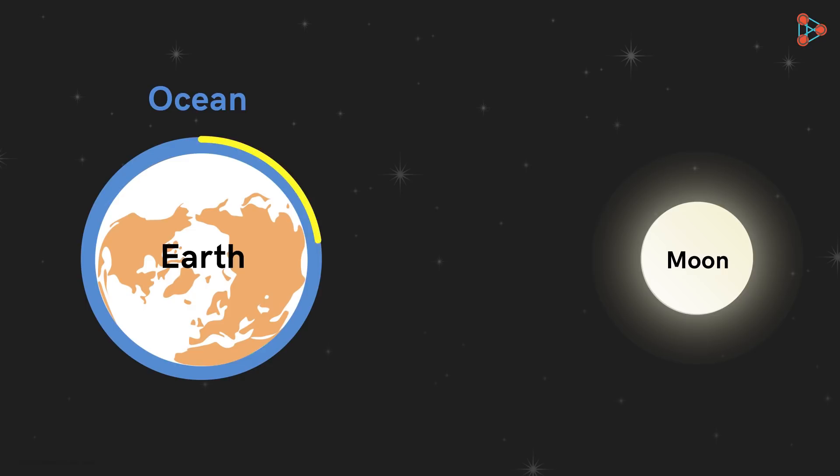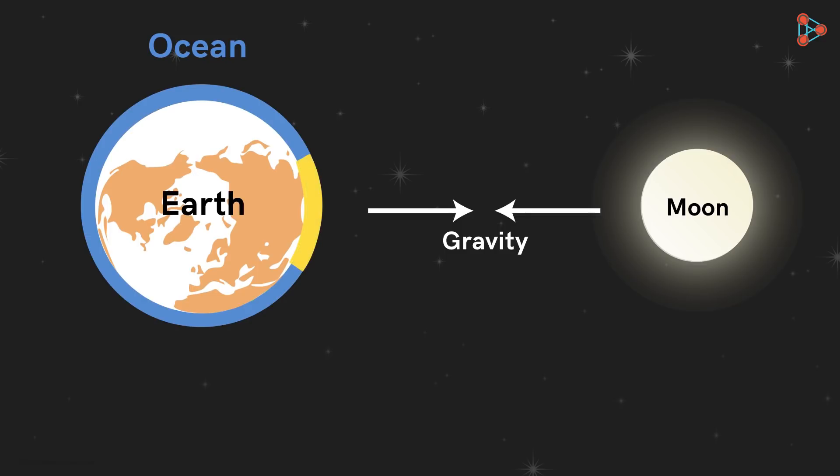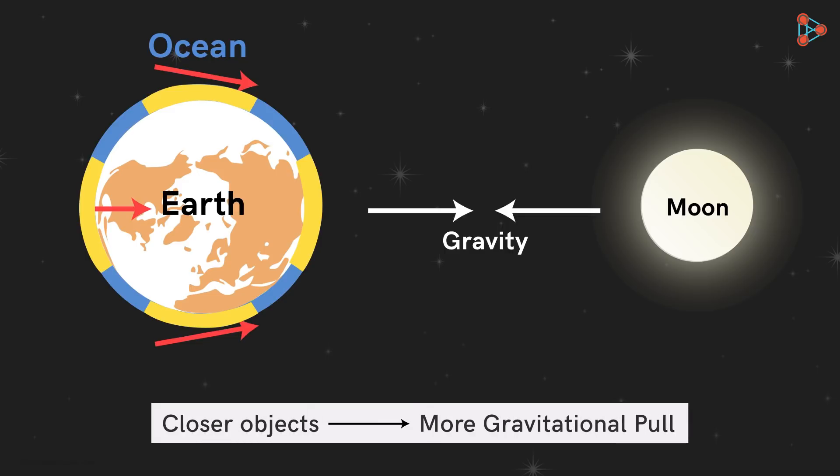We know that the earth and the moon are attracted to each other because of gravity. The moon exerts a gravitational pull on the earth on all its sides. For instance, in this position, the moon will not only exert the pull at this point, but also here at the poles and also here at the far end. But we also know that the closer the two objects are, the more is the gravitational pull they experience.